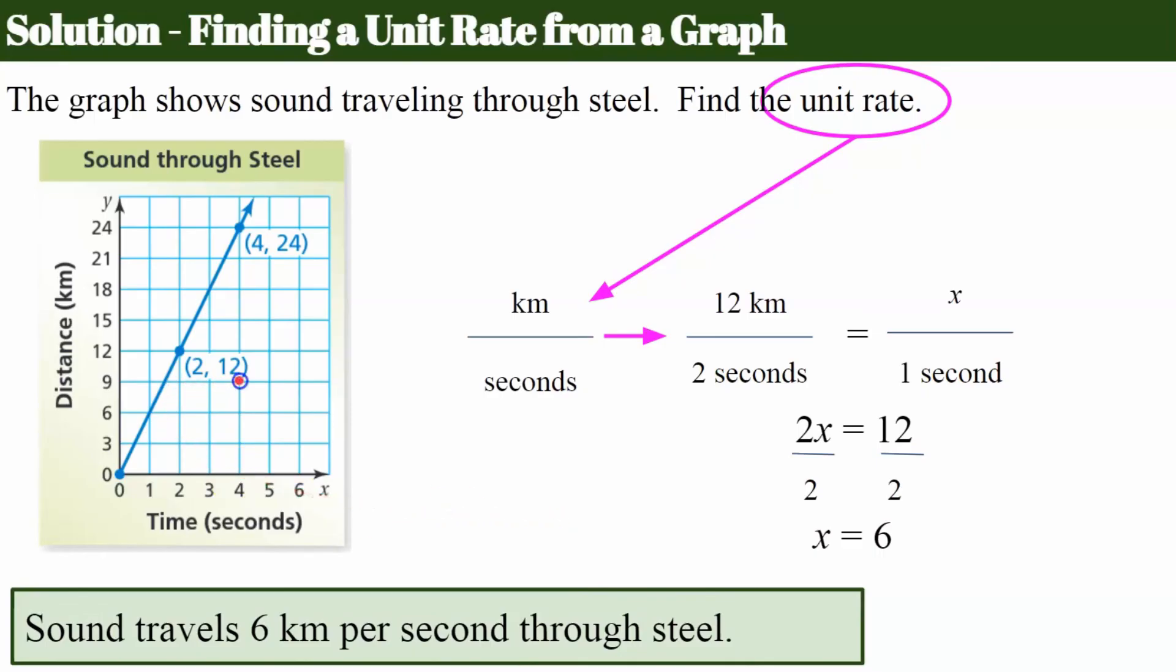Again noting 12 divided by 2 is 6. 24 divided by 4 is 6. Remember this is only true for proportional relationships.